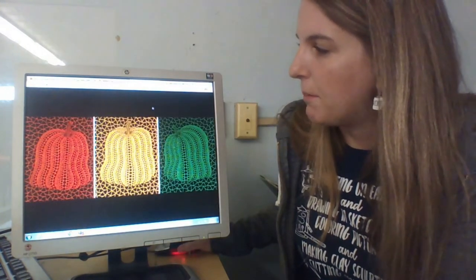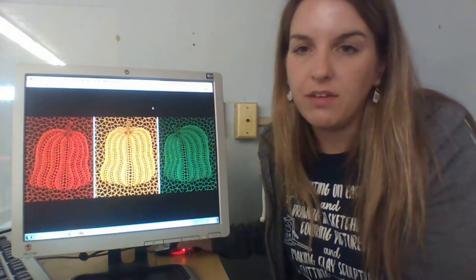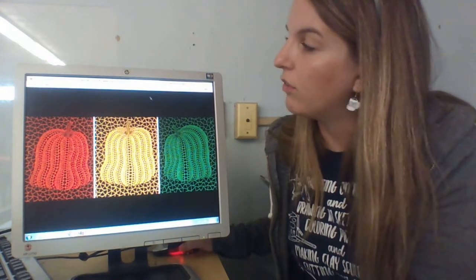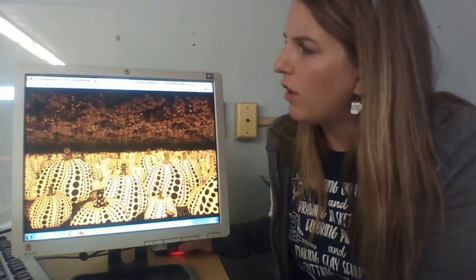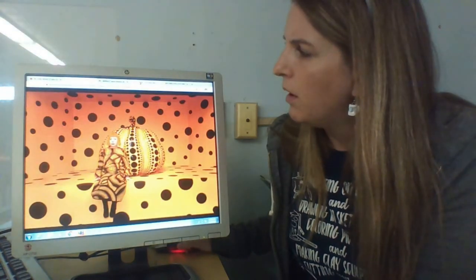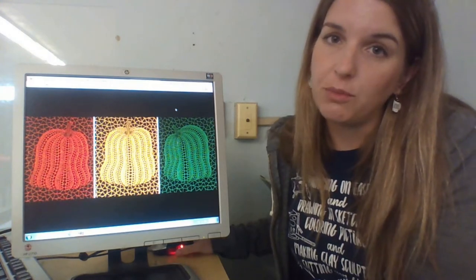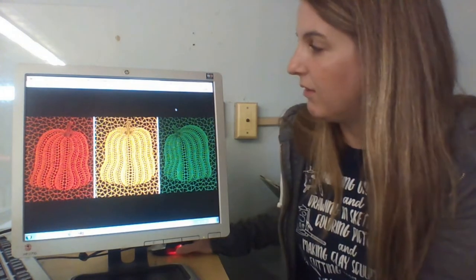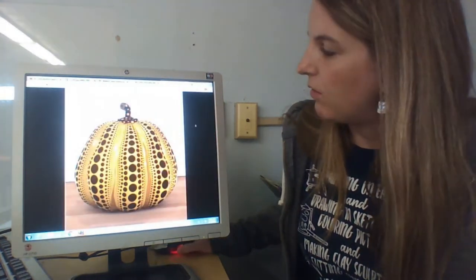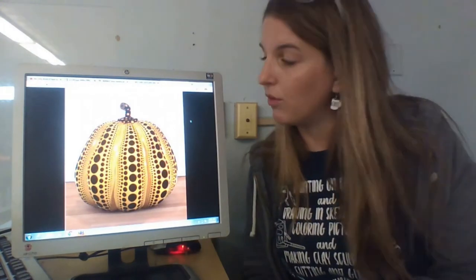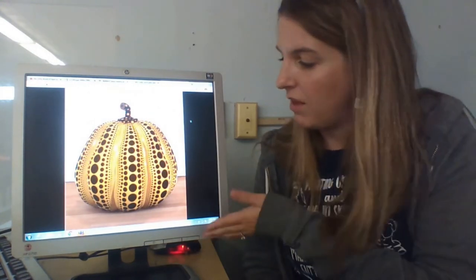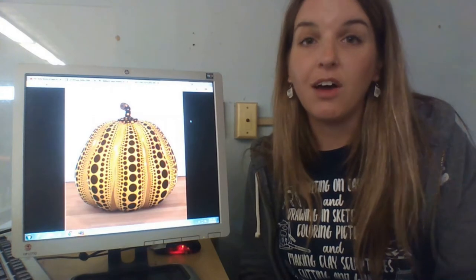This is a print that she did with different pumpkins. She does use different colors. She does use a lot of orange and a lot of yellow, but this is one that also shows green, red. You are going to have the option to do whatever color you would like to do with your pumpkins. And then this is one of her giant pumpkins that serves for a great reference when it comes to working on yours.